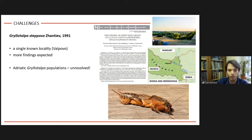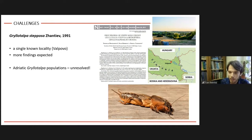A much tougher problem exists on the coast, where Adriatic Gryllotalpa populations have their taxonomic status still unresolved. They definitely belong to a distinct species, very different from the other two inhabiting the country. They could represent one of the Italian species, a species from the southern Balkans, or possibly an endemic species for this area — so a revision is definitely needed.